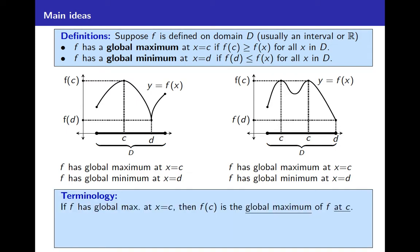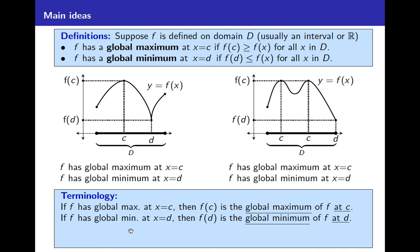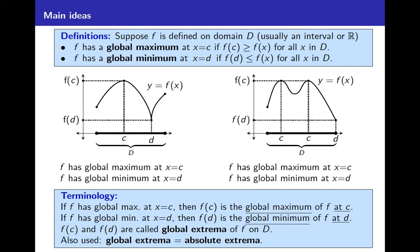Some terminology: if f has a global maximum at x equals c, then that y value f of c is called the global maximum of f at c. Likewise, if f has a global minimum at x equals d, then that y value f of d is called the global minimum of f. Collectively, these are called the global extrema of f on the interval. Be aware that different texts use different words — sometimes global extrema are referred to as absolute extrema. I'll tend to use global extrema, but sometimes I'll say absolute extrema; they mean the same thing.